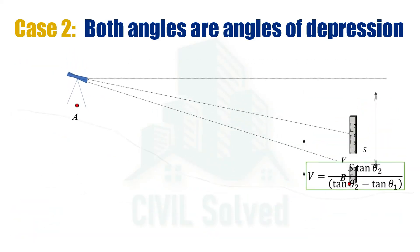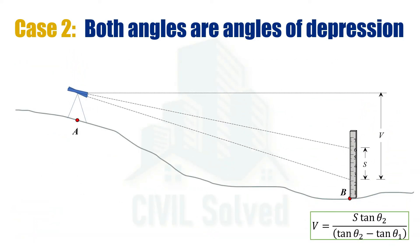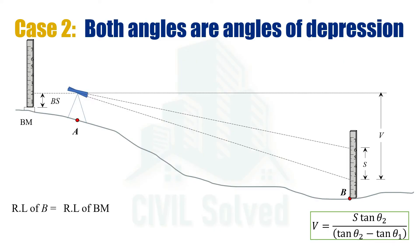Sometimes we are also asked to calculate the reduced level of point B. In that case we need a point of known reduced level, which is a benchmark. Placing the staff at that point and taking the backsight reading, the reduced level of the axis of instrument equals the reduced level of the benchmark plus the backsight reading. Since the axis of instrument is higher than point B, we need to move down.